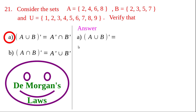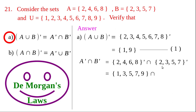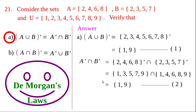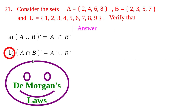For question (a): find (A union B) whole dash. A union B equals {2, 3, 4, 5, 6, 7, 8}, and its complement equals {1, 9} — call this equation 1. Then find A dash intersection B dash: A dash and B dash are found by removing A and B elements from U, and the common elements of both dashes is {1, 9}. Since both sides equal {1, 9}, we verify that (A union B) whole dash equals A dash intersection B dash.